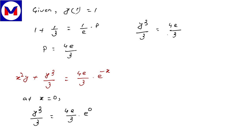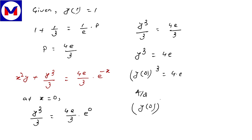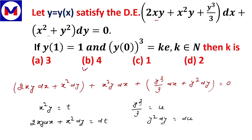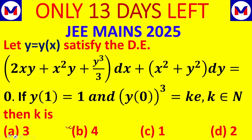So y³/3 = 4e/3, which gives y(0)³ = 4e. Since y(0)³ = k·e where k is a natural number, the value of k is 4. This is the required answer and the answer is option B.